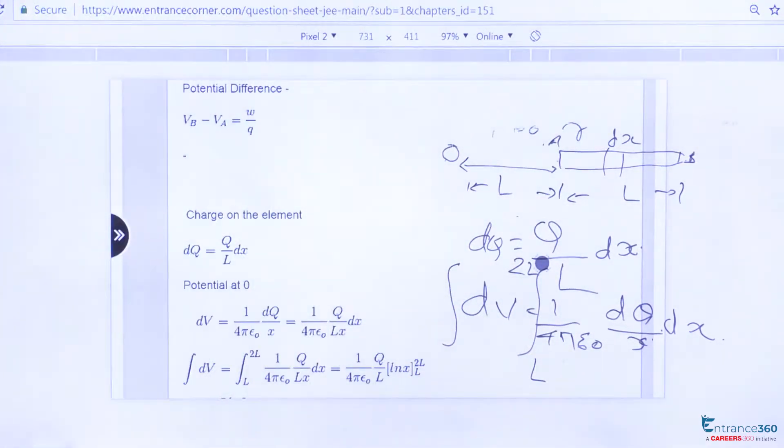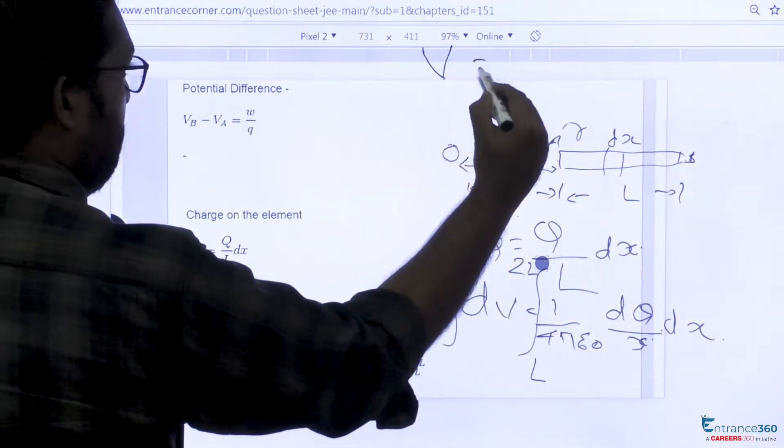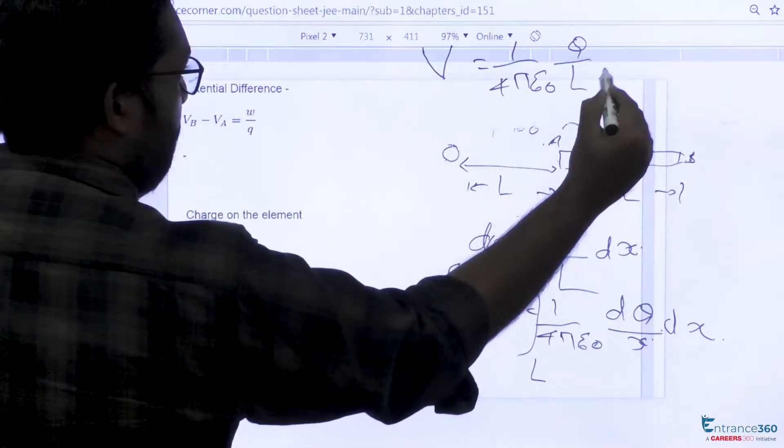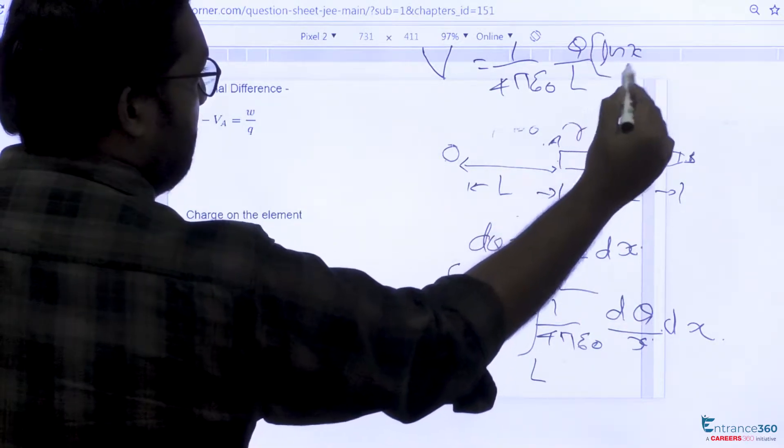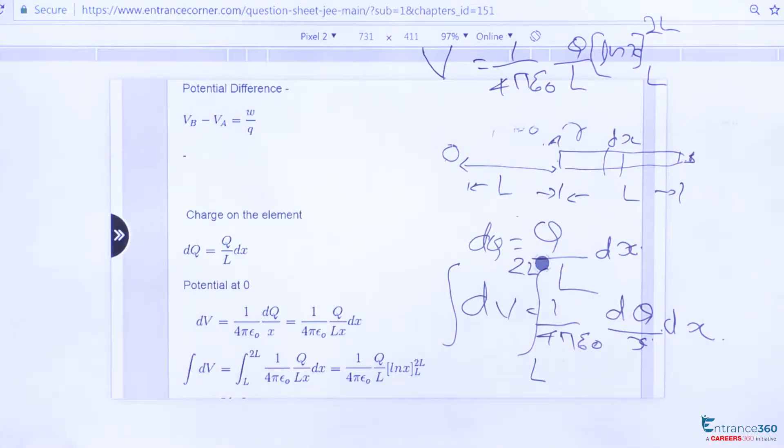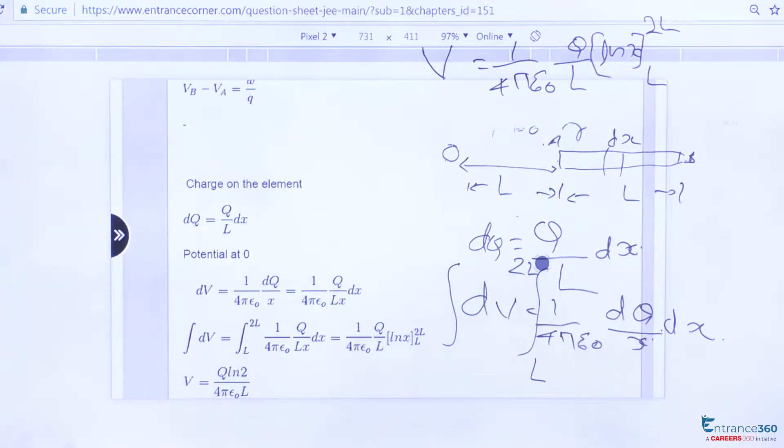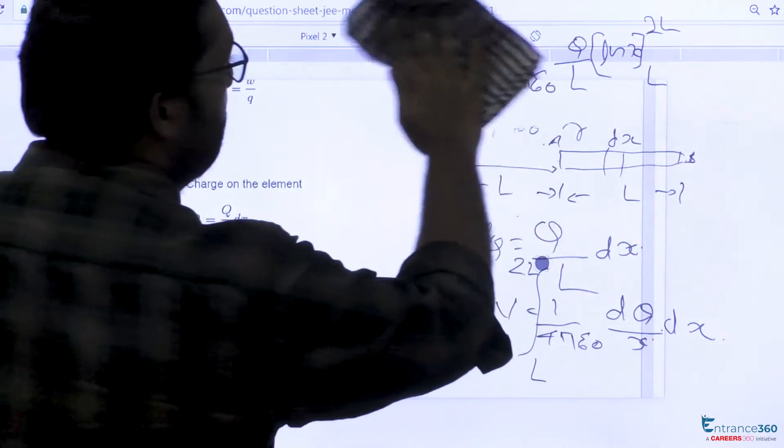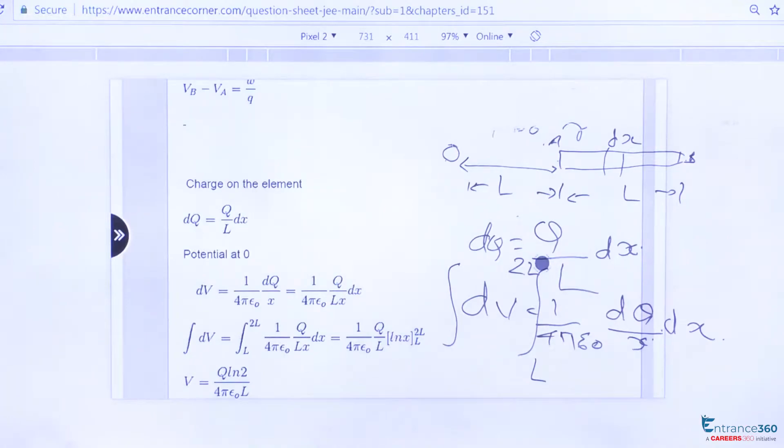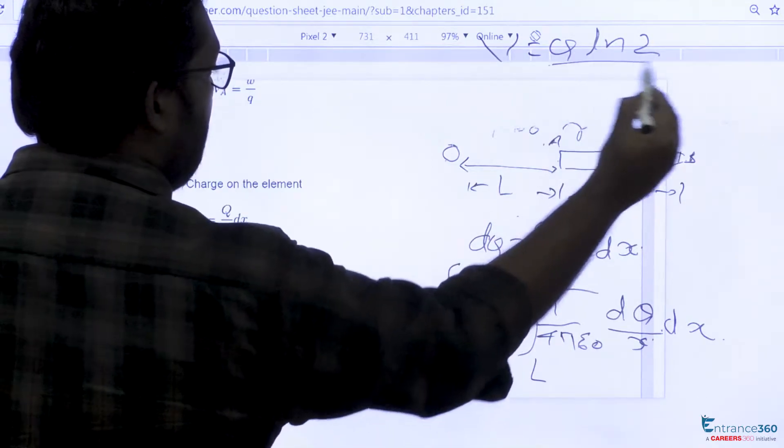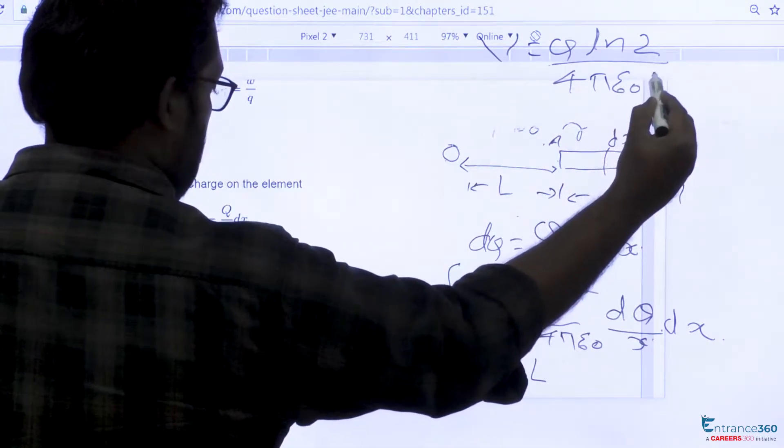This calculation you will get V as 1 by 4π epsilon zero Q by L into ln of x from L to 2L. So after calculating you will get potential as V equal to Q into ln of 2 divided by 4π epsilon zero L.